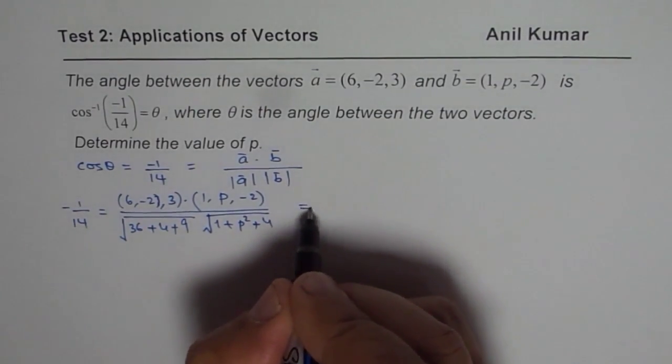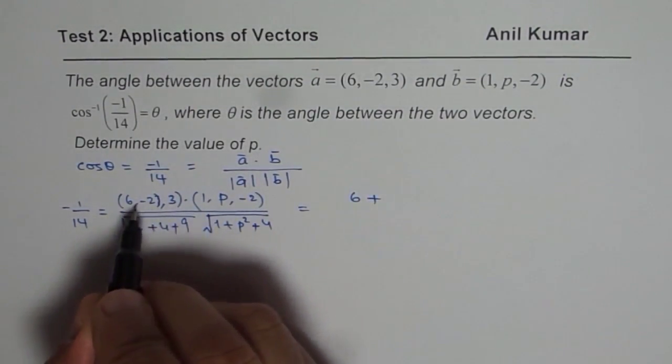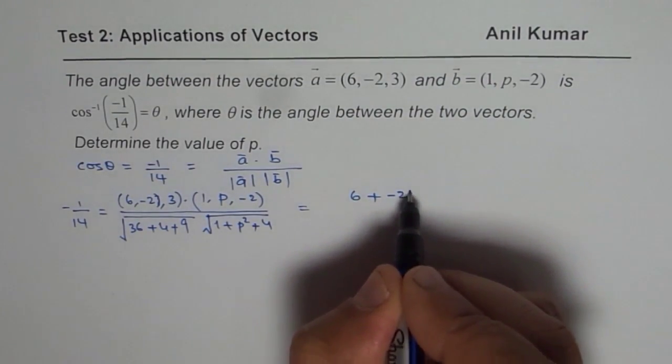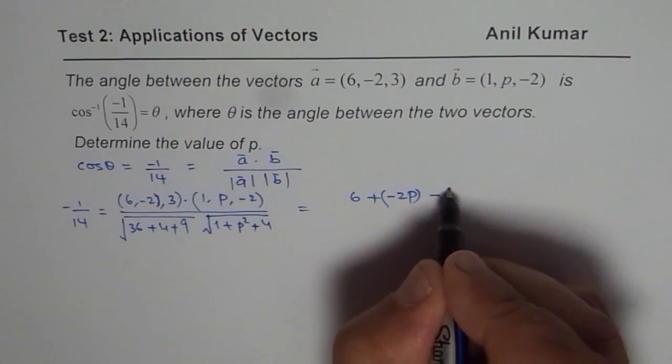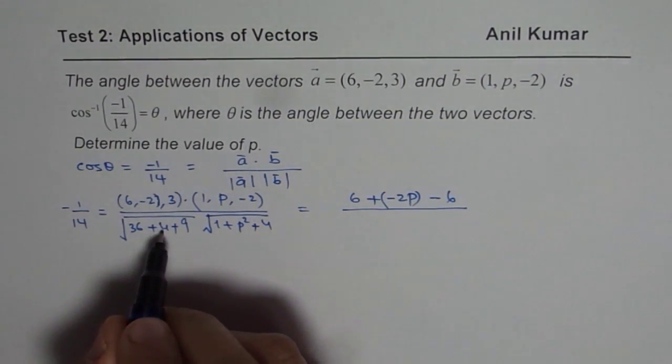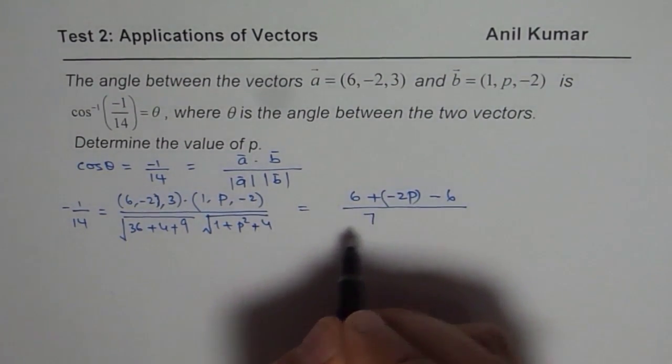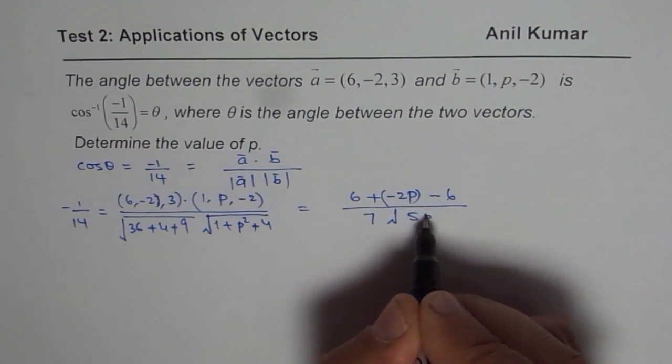Let's find the dot product and simplify it a bit. So 6 times 1 is 6, plus -2p, and 3 times -2 is -6, over 36 plus 4, 40, 49 square root is 7, and here we get square root of 5 plus p squared.